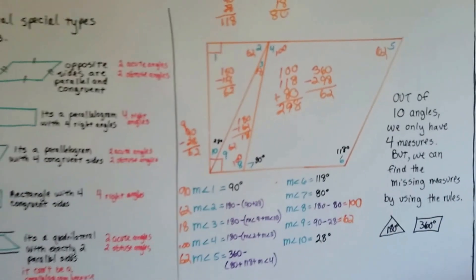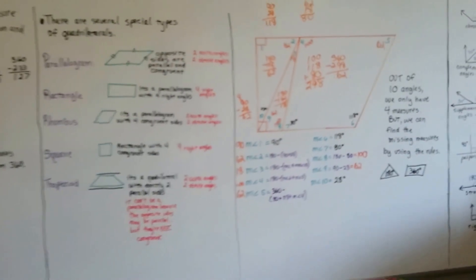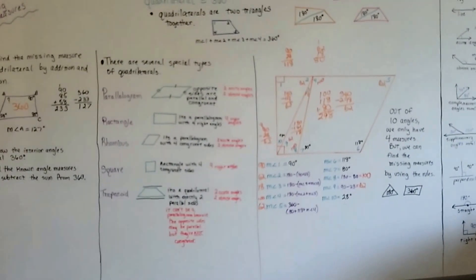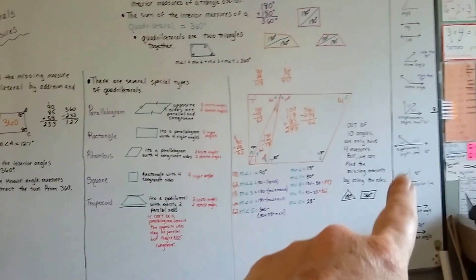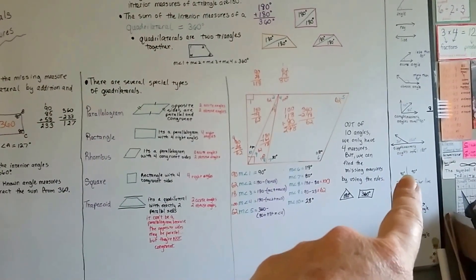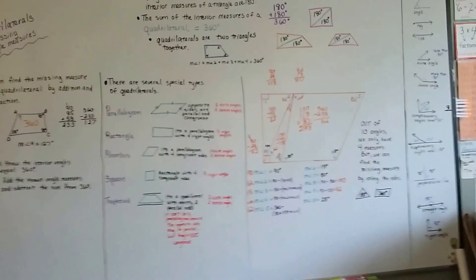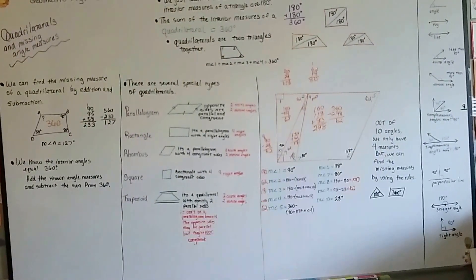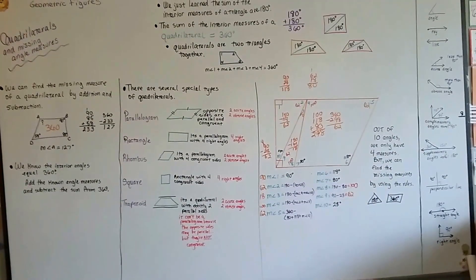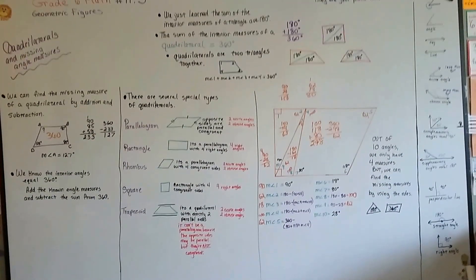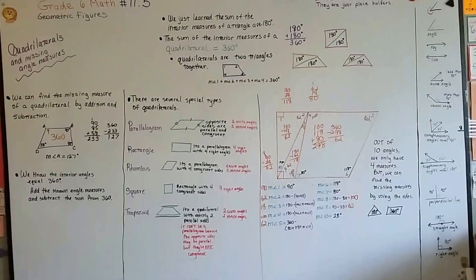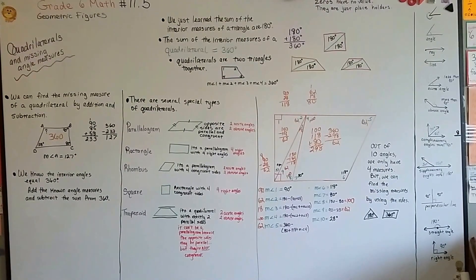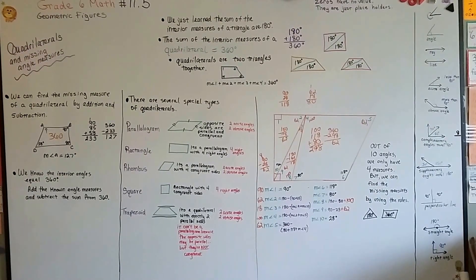Just remember the rules that we learned, okay? Complementary angles total 90, supplementary angles total 180, perpendicular right angles are 90, straight angles are 180, okay? And you can figure this out. Triangles are 180, and quadrilaterals are 360. And you can add and subtract and figure out your own missing measures, okay? You can do it. I know you can. This is really easy. See you next video. Bye.